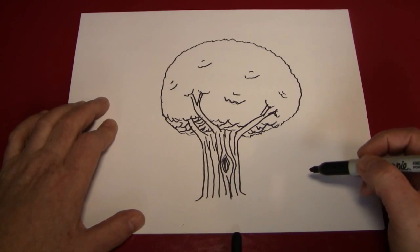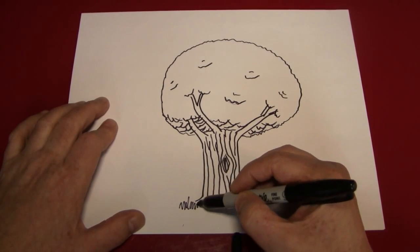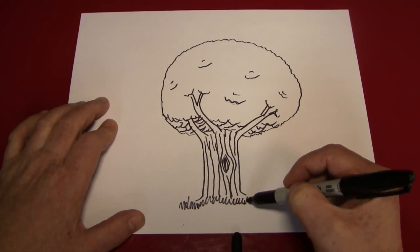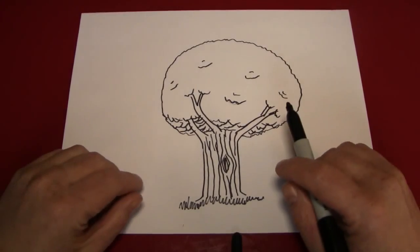And to finish off our picture, we're just going to make a little bit of grass right around the tree like that. And here we are. We have a tree.